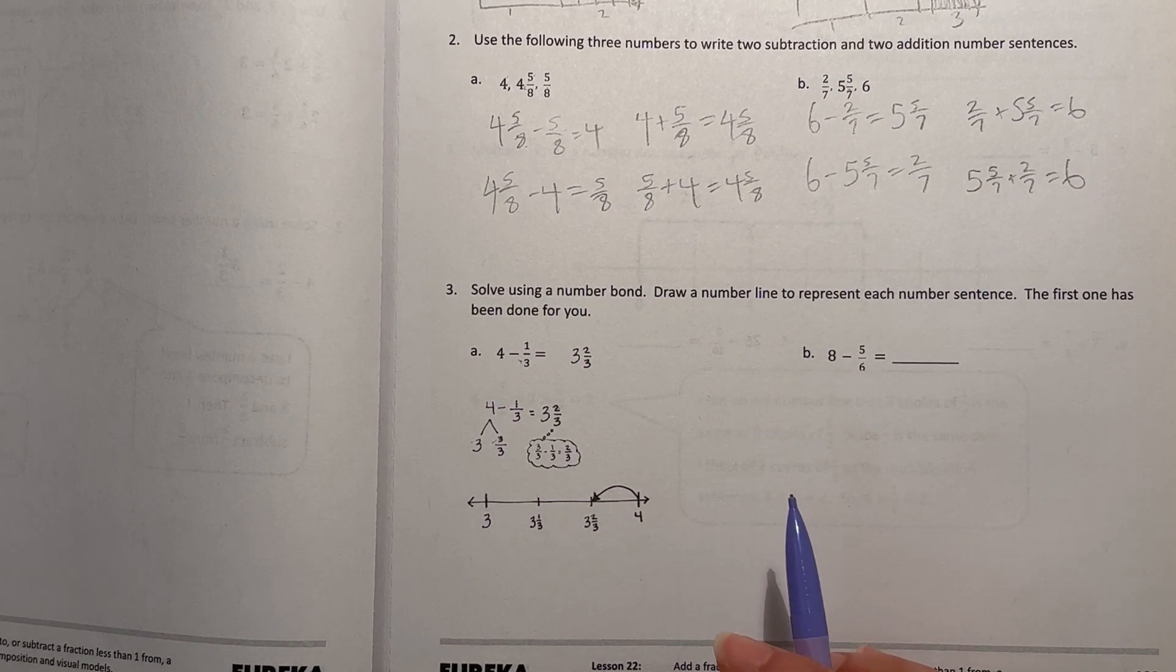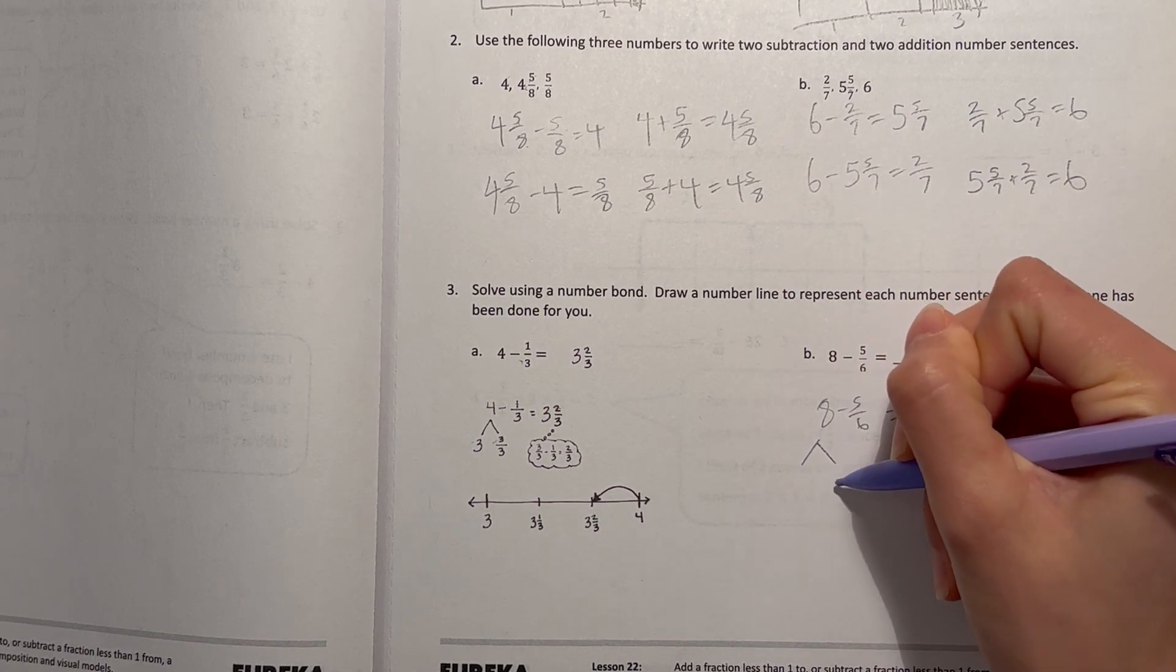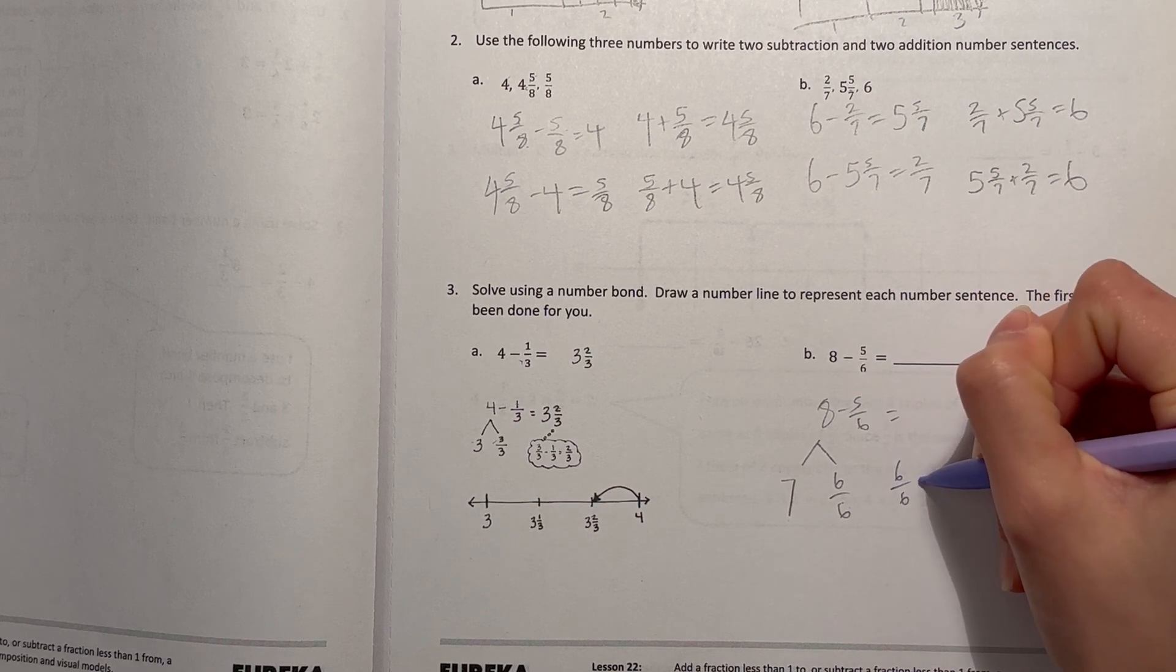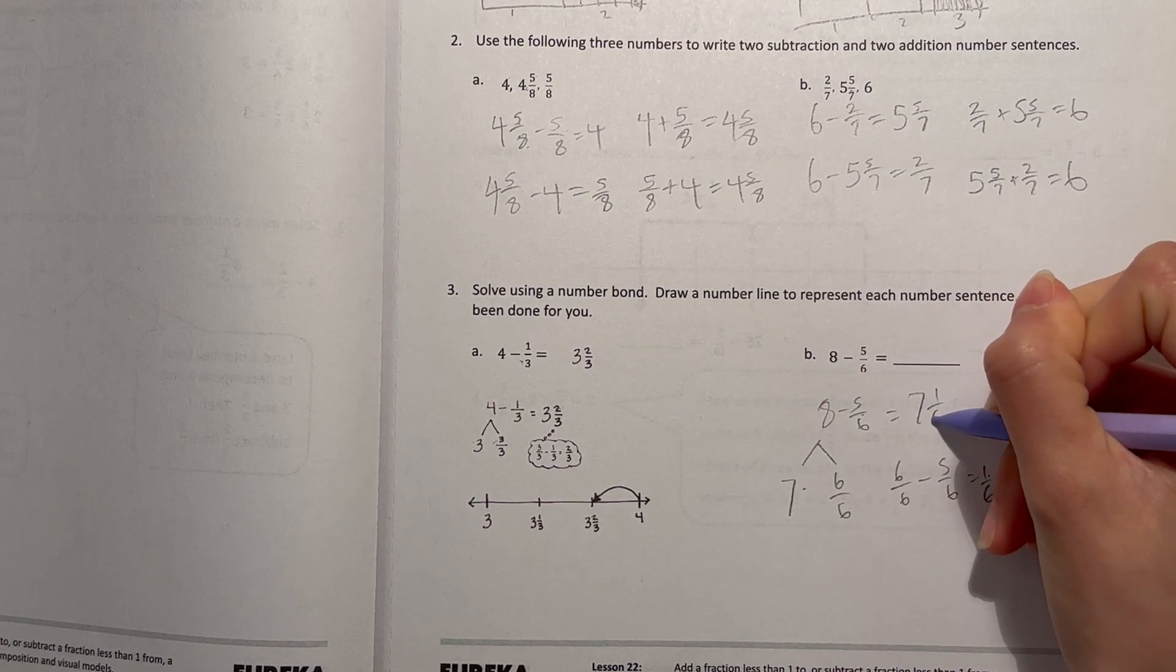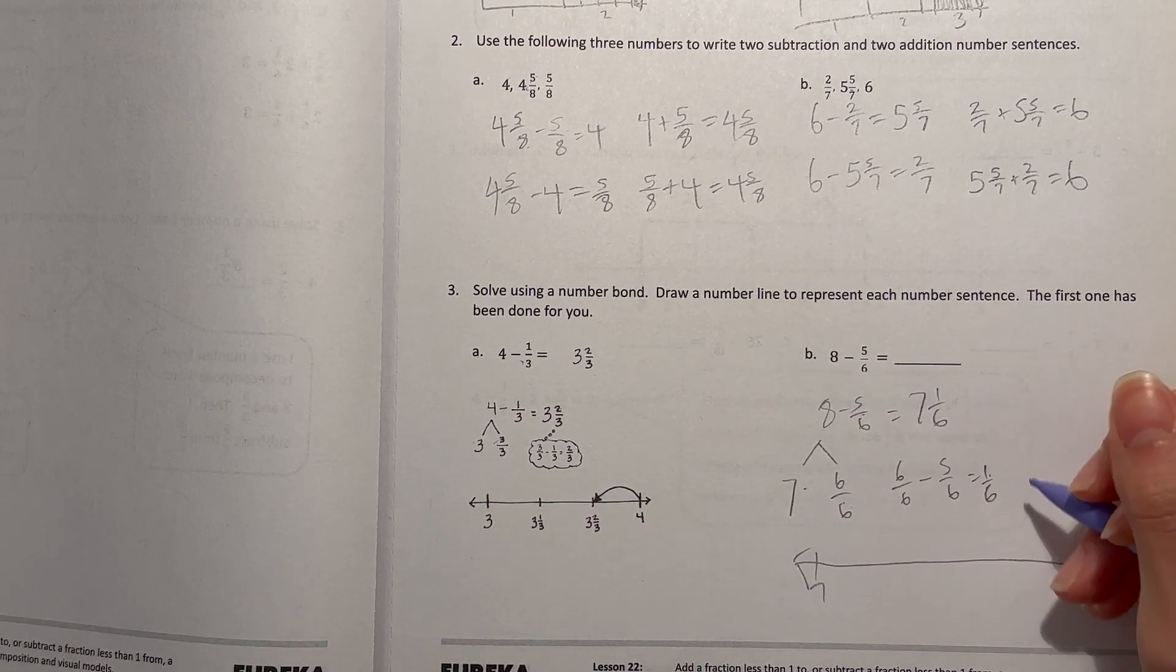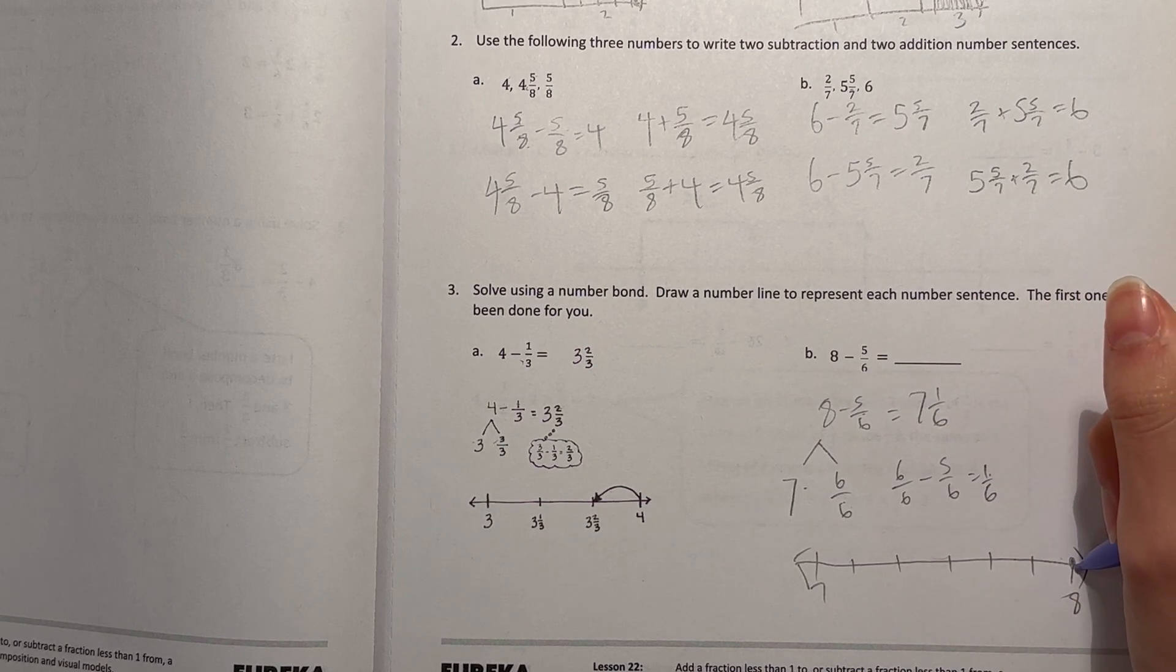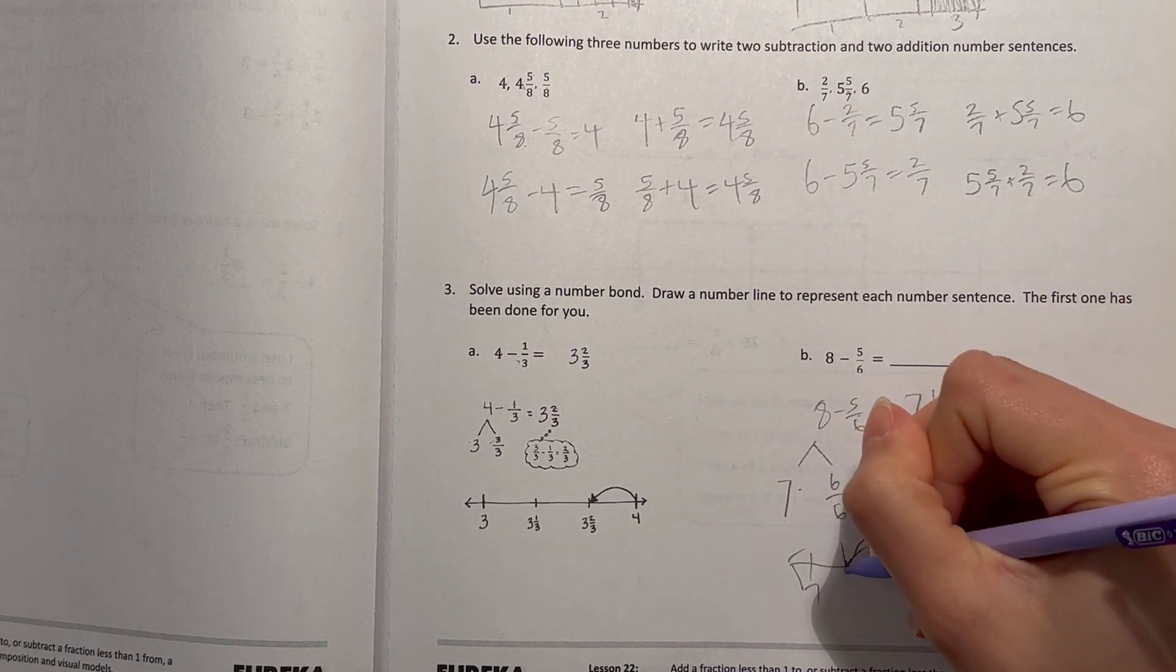All right, so we do that with B, 8 minus 5 sixths. 8, we can take out 6 sixths. That's a whole, so that'll give us 7 left. So 6 sixths minus 5 sixths is 1 sixth. So that's 7 and 1 sixth. All right, and a number line. Like 7, 8. So that's 8 minus 5 sixths. So that's our answer.